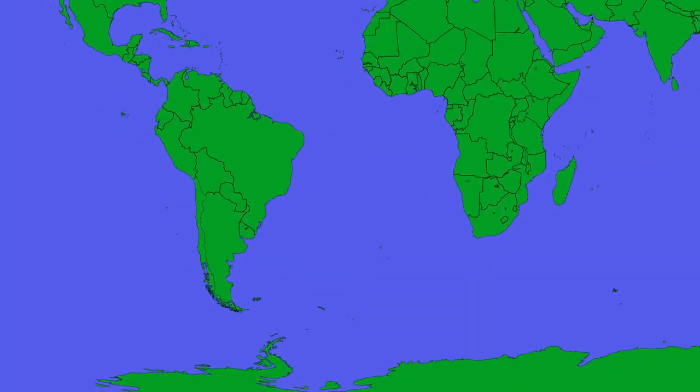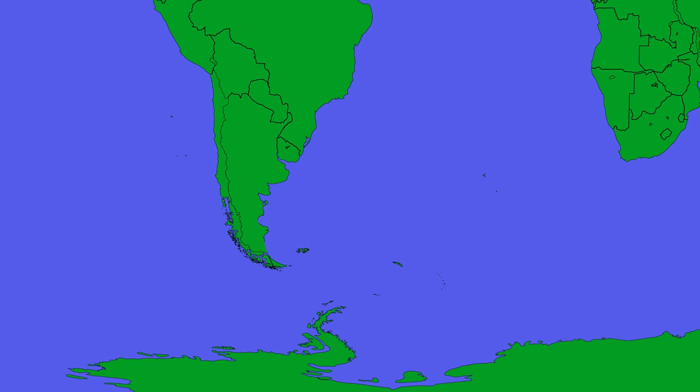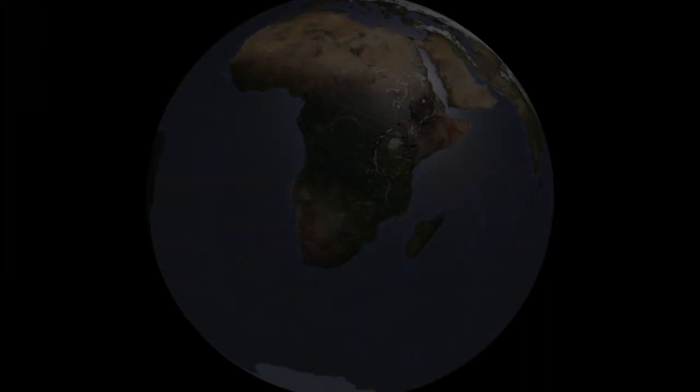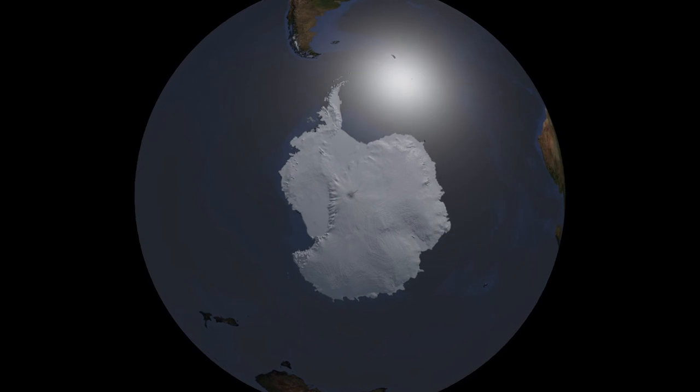The downside of the Mercator projection is that it stretches the earth at the poles, which is why Antarctica looks like it's so large when in reality it just covers a small area over the South Pole.